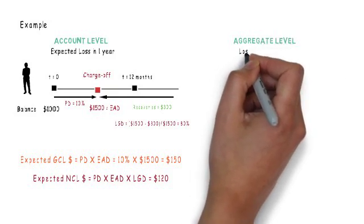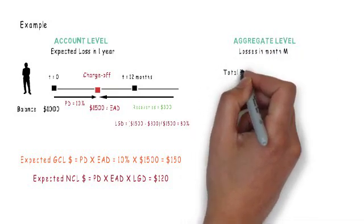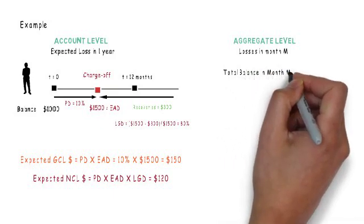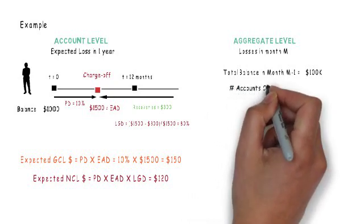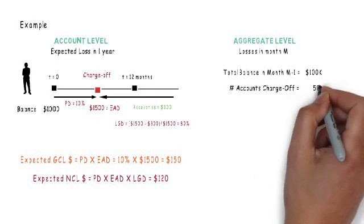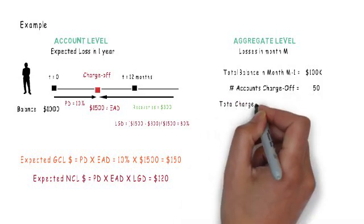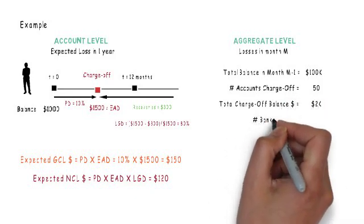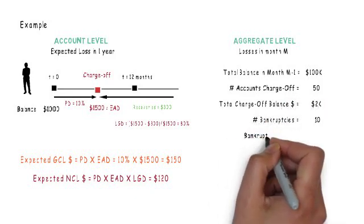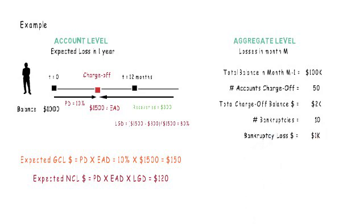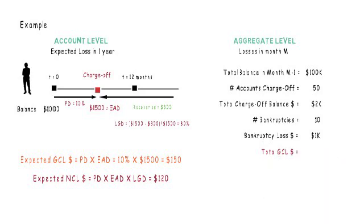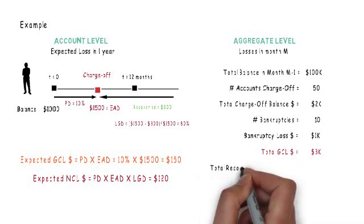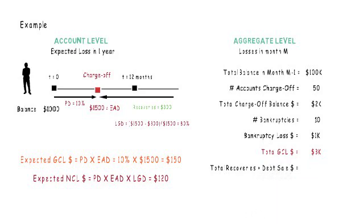Now let's aggregate it and calculate losses in a particular month M. Say the total balance of all accounts in month M-1 is equal to 100,000 dollars. In month M, the number of accounts charged off is equal to 50 and the charge-off balance is equal to 2000 dollars. The number of bankruptcies is equal to 10 and the bankruptcy loss to the bank is 1000 dollars. So the total GCL, the sum of contractual charge-offs and bankruptcy losses, is equal to 3000 dollars. And total recoveries and asset sales in month M is equal to 200 dollars.